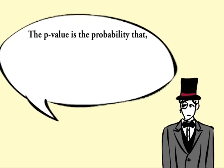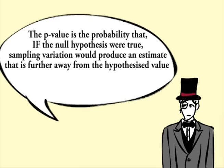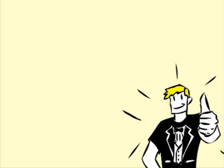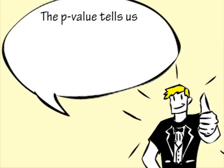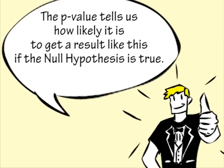In formal terms, the p-value is the probability that, if the null hypothesis were true, sampling variation would produce an estimate that is further away from the hypothesised value than our data estimate. In less formal terms, the p-value tells us how likely it is to get a result like this if the null hypothesis is true.